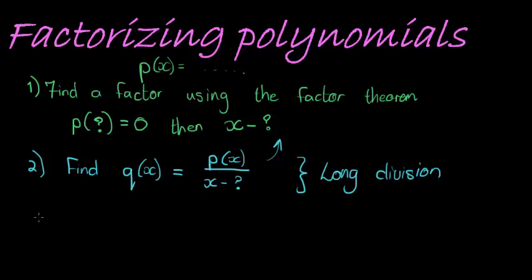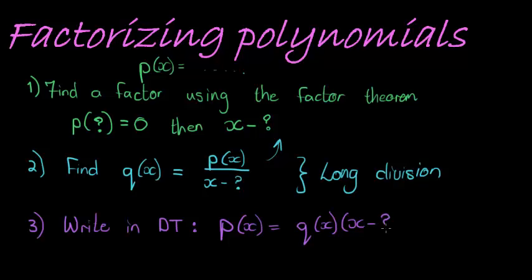The next step, the third step will be to write in division transformation. So if we have found our Q, then we can write P(x) is equal to, now I found Q using long division. I have that this is already a factor, whatever this value is that I substituted to get 0, and I know my remainder is equal to 0, so I don't need to write that.